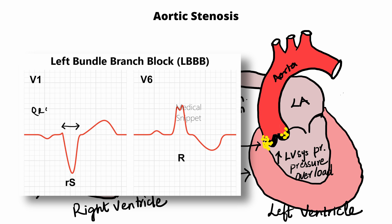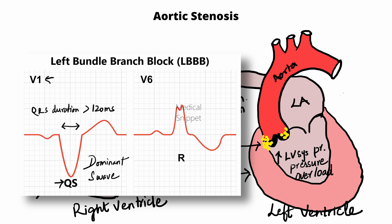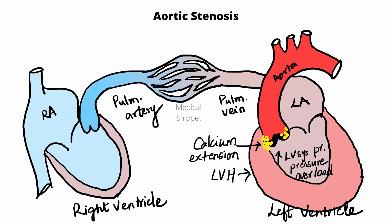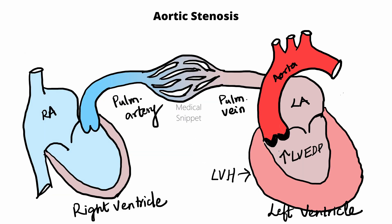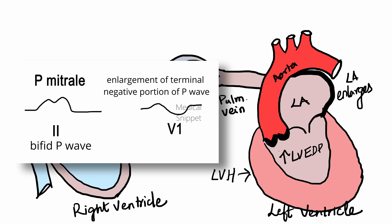Left bundle branch block is seen in ECG as QRS duration more than 120 ms. In V1, there is a dominant S wave — that is, an rS complex with a small R wave and deep S wave, or a QS complex with no preceding R wave. In V6, there is a broad, notched, M-shaped R wave. As time progresses, LV end diastolic pressure rises, which causes back pressure changes, causing the left atrium to enlarge, which is seen as P mitrale in lead 2 or enlargement of the terminal negative portion of the P wave in V1.